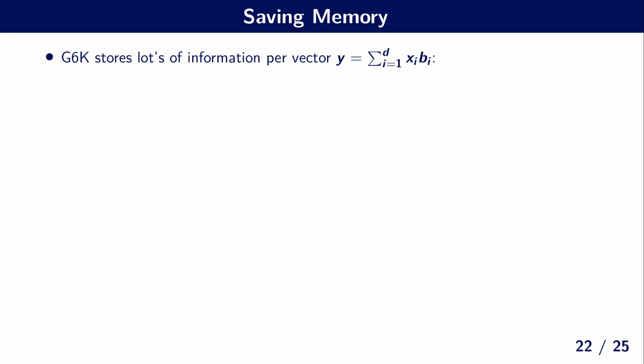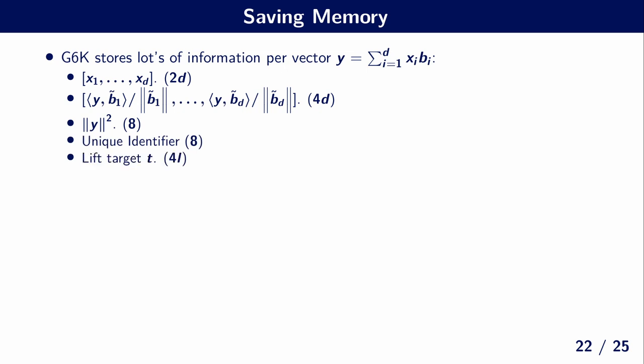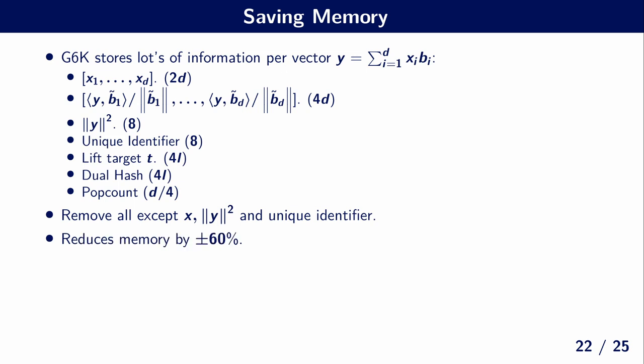So last but not least, we have to discuss memory. Lattice sieve algorithms are very memory-intensive. And in our runs, we had to store up to half a billion of vectors. So every byte we can save per vector saves us tens or hundreds of gigabytes in the end. However, the General Sieve Kernel stores lots of information per vector. For example, the coefficients in the basis representation, the so-called Gram-Schmidt representation, the length of the vectors, a unique identifier, this lift target is pre-computed, this dual hash is pre-computed if we use it. But also a pop count that's being used to quickly decide if two vectors are somewhat close to each other. And we want to remove all of this except this x, this length, and the unique identifier. And this means that we reduce the memory by more than 60%.